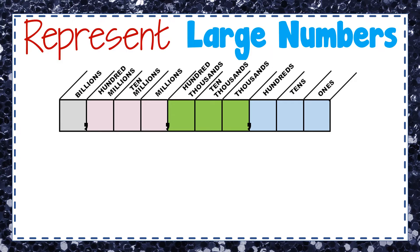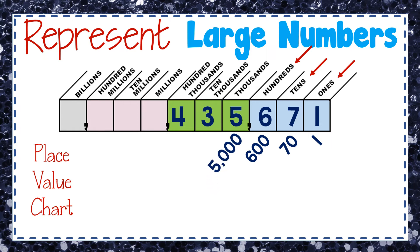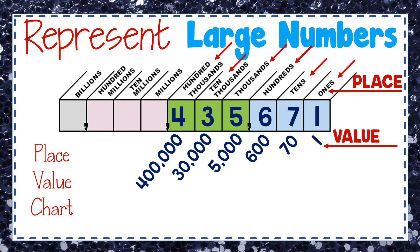Here I have a number on a place value chart — there are many variations of this type of chart. We're going to place numbers here to talk about their place and their value. The one is in the ones place with a value of one. The seven is in the tens place with a value of seventy. The six represents six hundred, the five represents five thousand, the three is thirty thousand, and the four is four hundred thousand. The number is four hundred thirty-five thousand, six hundred seventy-one.